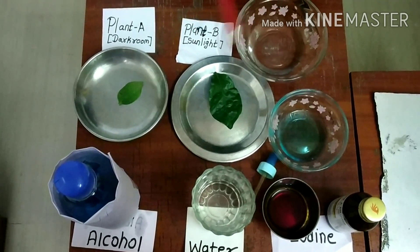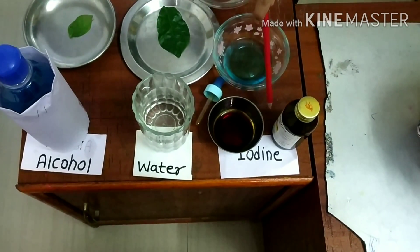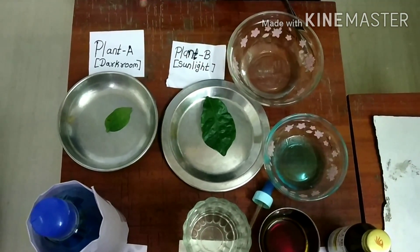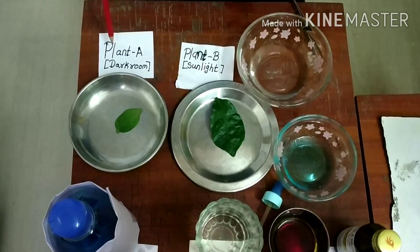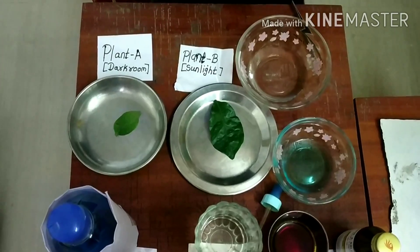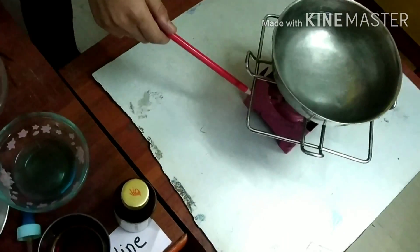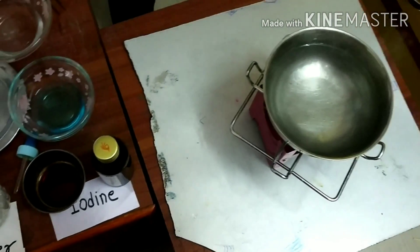Now let us open this dark room and check it out. Here we have water, alcohol, and iodine. This is Plant A which is in the sunlight, and this is Plant B which is in the dark room. These are the evaporating dishes, this is the burner, and this is the stand.